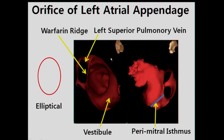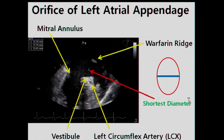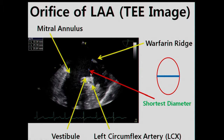This slide shows the inner view and outer view of the left atrial appendage. The morphology of the orifice of the left atrial appendage is usually elliptical or oval shaped. The anterior border of the orifice is the vestibule, and the posterior border is the Coumadin ridge (waferrin ridge). The perimitral line runs between the anterior border of the left inferior pulmonary vein and the lateral mitral annulus. This is a TEE view of the left atrial appendage, showing the Coumadin ridge, the circumflex artery, the vestibule, the left ventricle, and the left atrial appendage. The distance between the Coumadin ridge and vestibule usually represents the shortest diameter of the appendage orifice.